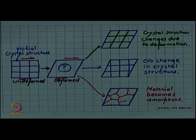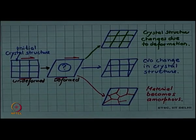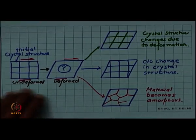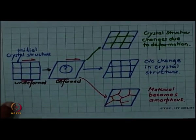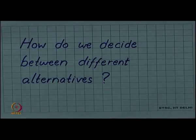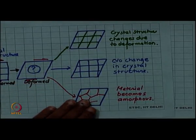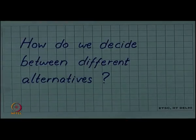I have given you these 3 options, you may even think of yet another option other than these 3. But the question is how do we decide, how do we decide between these 3 alternatives or any other alternative that you think of? What is the basis for decision, how do we say whether the crystal structure changes or does not change or the material becomes amorphous? How do we decide between these different alternatives?